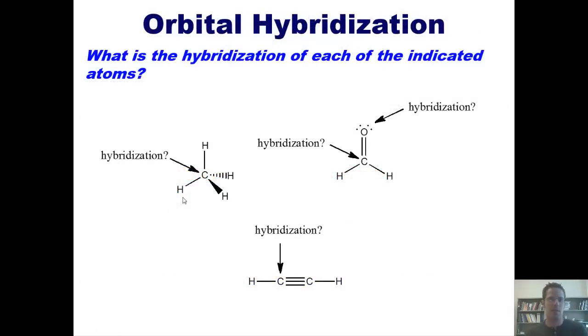Let's take a look at some examples. What is the hybridization for each of the indicated atoms? Here I've got a carbon that has a hydrogen, hydrogen, hydrogen, hydrogen. That is four things. So its hybridization is sp3.